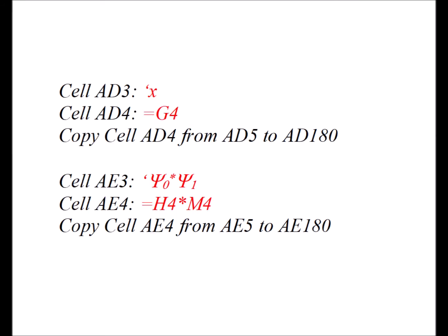The instructions in this video assume that you have already completed the worksheet that was demonstrated in part 1. So then we continue in cell AD3 with the label x. In cell AD4, equals G4, and then we copy cell AD4 from AD5 to AD180.